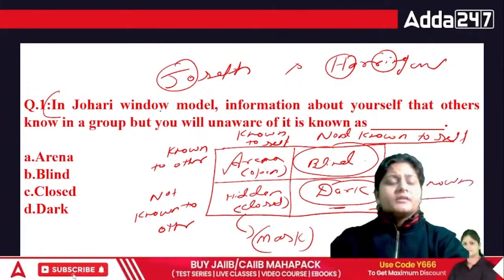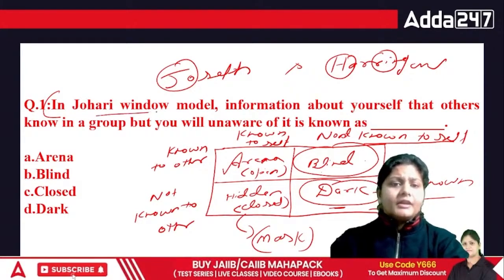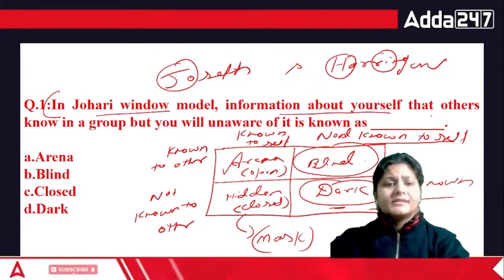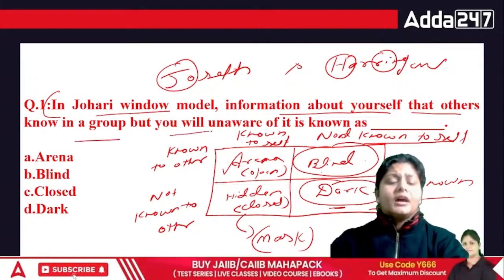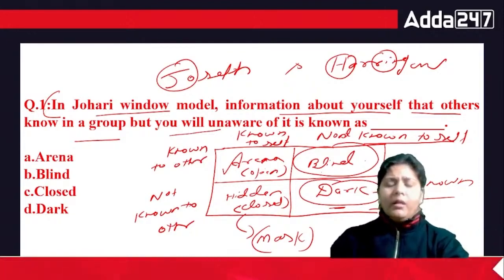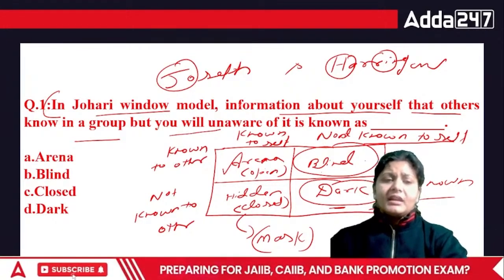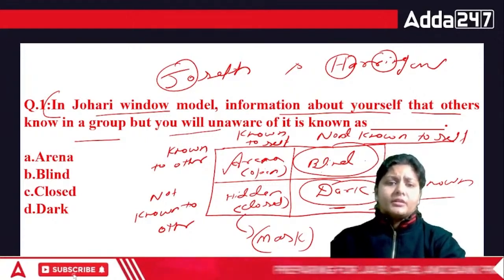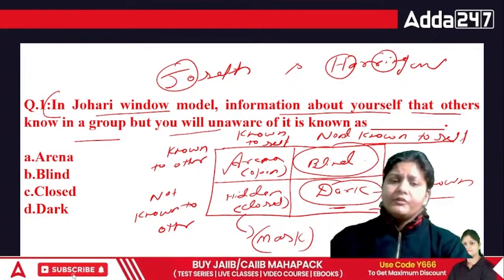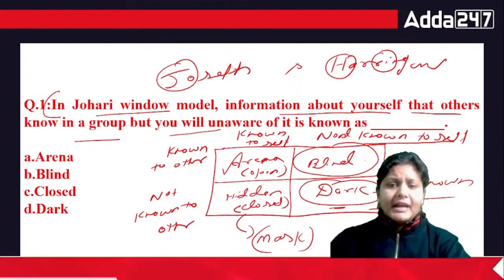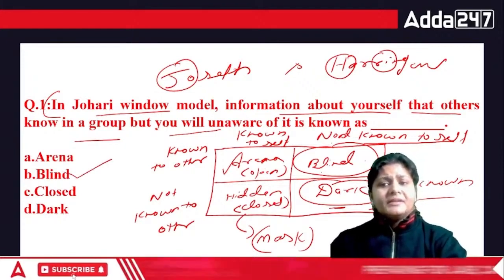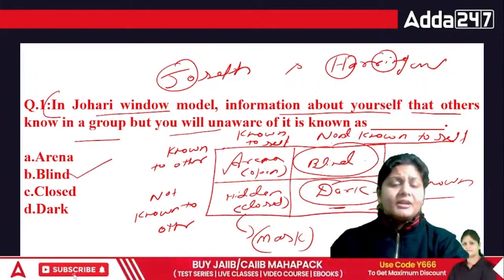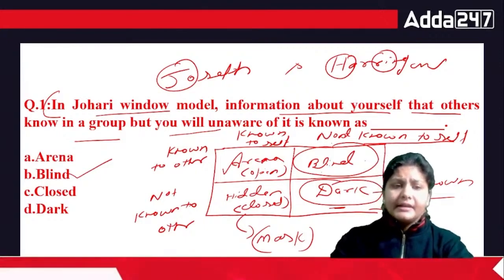In the Johari Window model, the information about yourself that others know in a group but you are unaware of corresponds to the Blind spot quadrant — others know about yourself, but you yourself don't know about it.